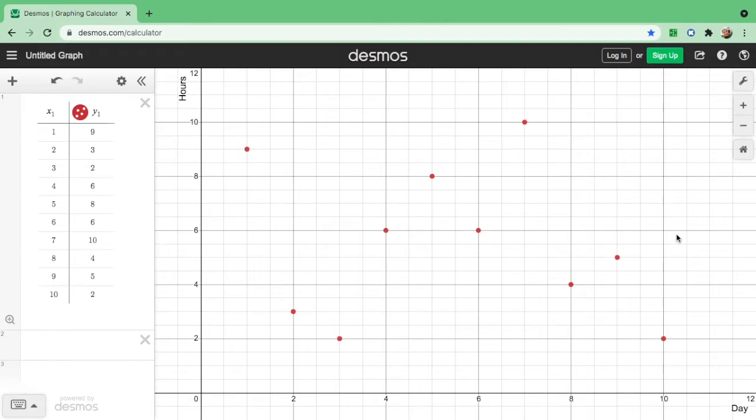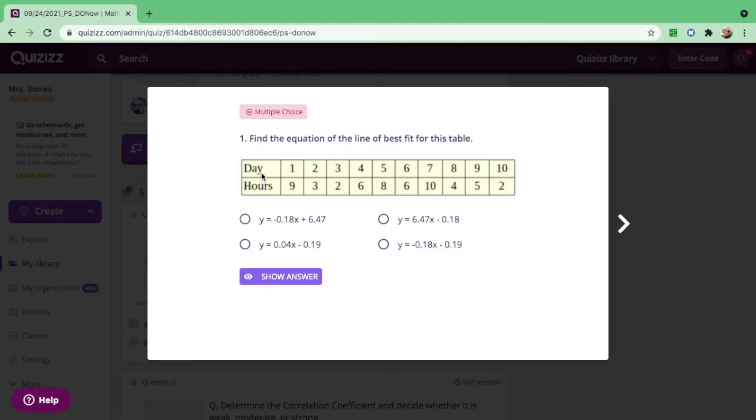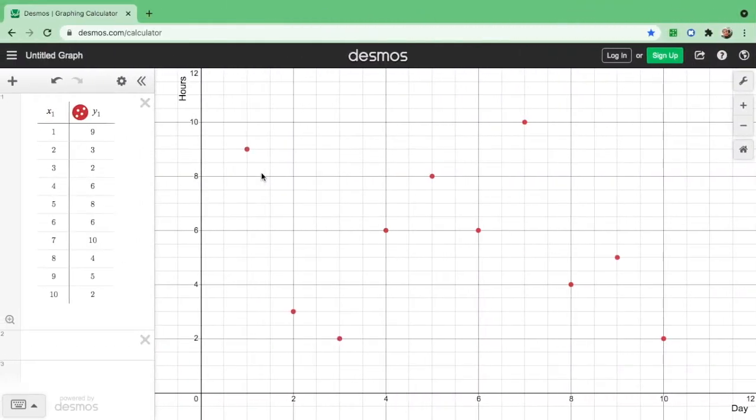So from the graph showing the scatter plot, can we say that there is a relationship between the two variables x and y, that is the day and the hour? So what is the relationship? Is there a positive correlation, negative correlation, or there's no correlation at all? From the graph, we could see that x has no correlation with y. But how do we know?